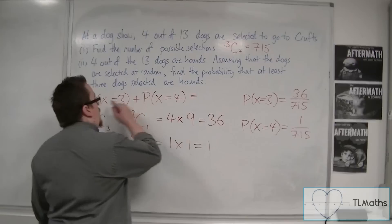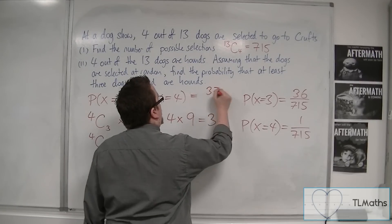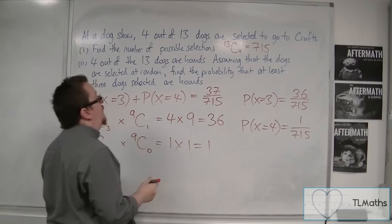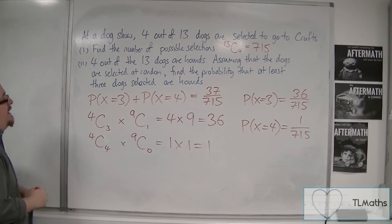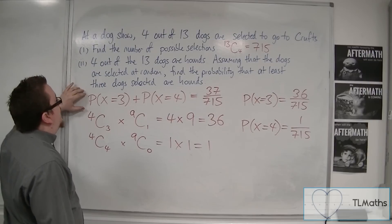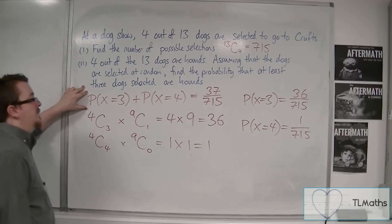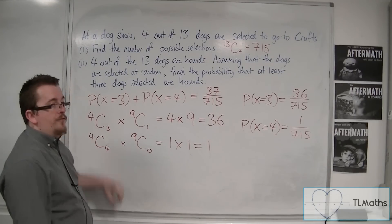So, adding those two probabilities together, I get 37 out of 715. So, this is the probability that at least 3 dogs selected are hounds.